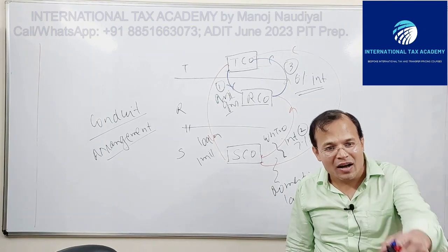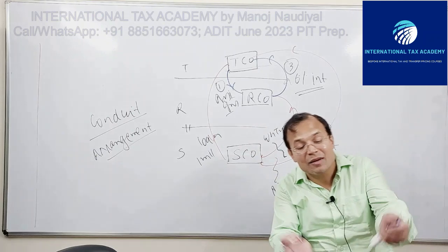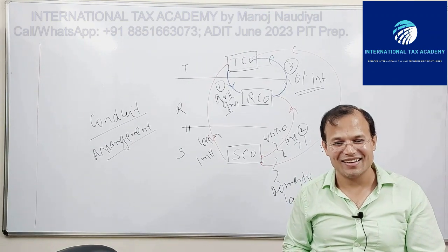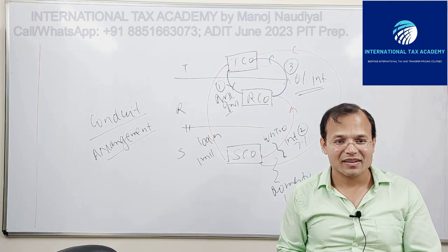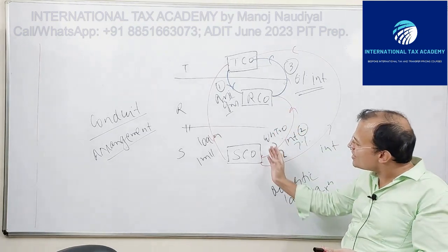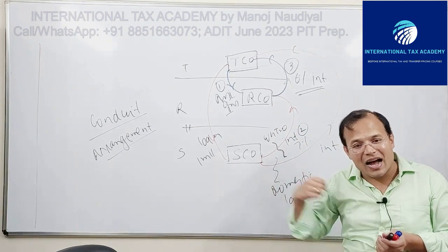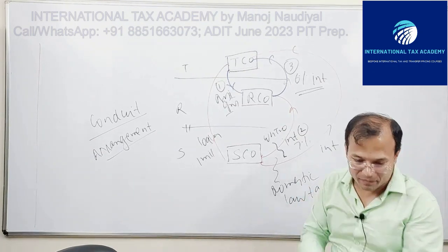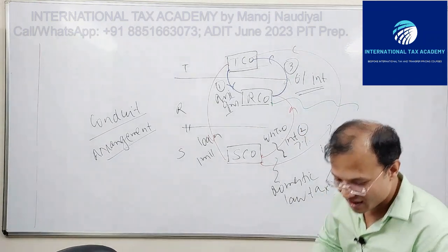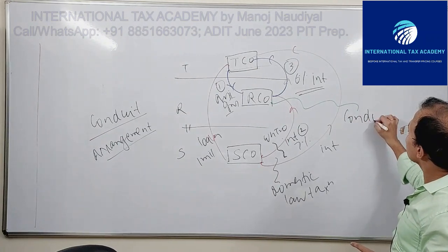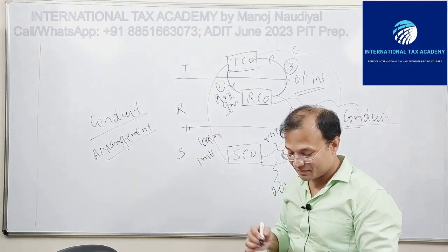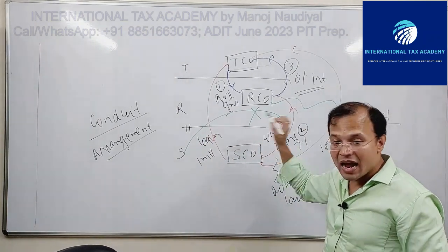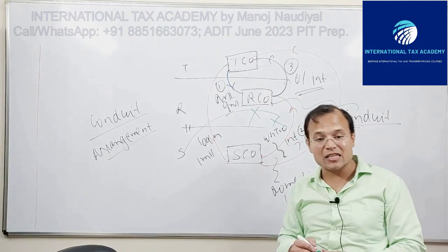You see what a conduit company is now? Can we see that Arco is acting simply as a pipe conduit? It is receiving the interest from Esco on one hand, and from the other it is passing on that interest to Tyco. So Arco is a conduit. That is why S will be justified in denying this treaty benefit, and therefore S will tax this interest payment as per its domestic laws.